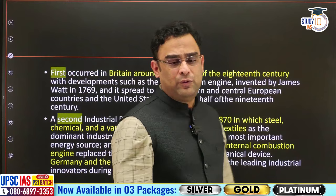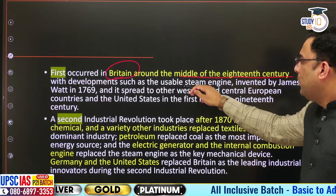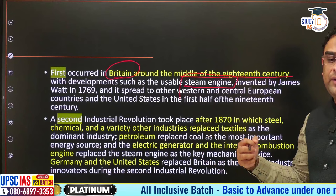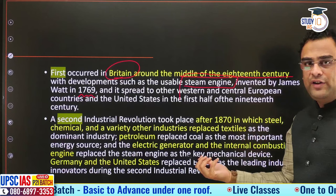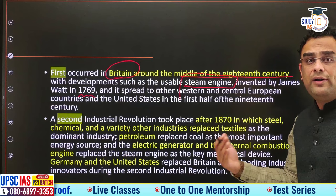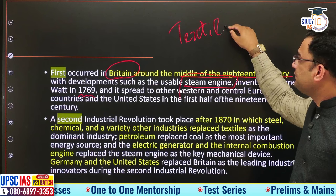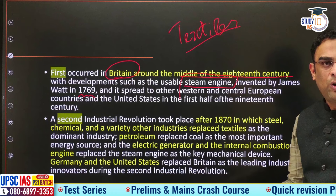Let us see the two major phases of this revolution. The first phase happened in Britain, around the middle of the 18th century, with the development of the steam engine as improved by James Watt. In 1769, James Watt made a workable steam engine — improving significantly on an earlier less efficient version. Using this technology, Britain embarked on its industrial revolution especially in the field of textiles. Slowly, steadily this spread to neighbouring countries of Europe and then later to USA, Japan and many other colonies.